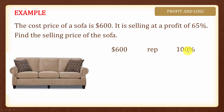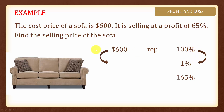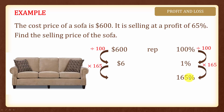Now, how many percent are we required to find for the selling price? Since it is selling at a profit of 65%, the selling price will be 165%. In order to find this, let us first find 1% by dividing both sides by 100. So $6 represents 1%. To find 165%, we multiply both sides by 165, and hence the selling price is $990.